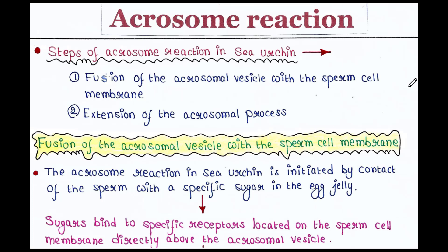There are two main steps of the acrosome reaction in sea urchin. First is fusion of the acrosomal vesicle with the sperm cell membrane, and then the extension of the acrosomal process. We will talk about them one by one.